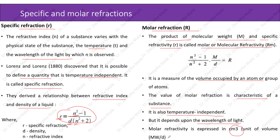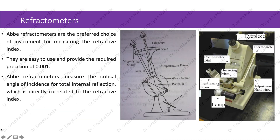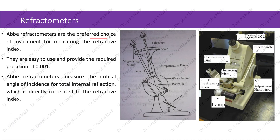Abbey's refractometers are the preferred choice of instrument for measuring the refractive index. They are easy to use and provide the required precision of 0.001. Abbey's refractometer measures the critical angle of incidence for total internal reflection, which is directly correlated to the refractive index.